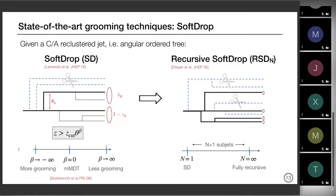If you tune beta: setting it to minus infinity is the more aggressive grooming — you're essentially destroying your jet completely — while setting beta to infinity means you're not touching it much. So with z_cut and beta you can play with the degree of grooming. An extension a few years later is called recursive soft drop: in reality there are several decays that don't have two prongs — for example, the top is a good counter-example with a three-prong structure. Soft drop would not capture the third prong, so you need a recursive method that instead of following only the primary branch follows all branches in your tree and removes all of them that do not satisfy the soft drop condition.